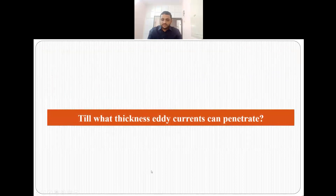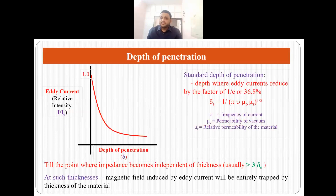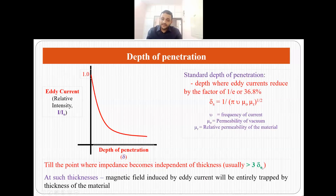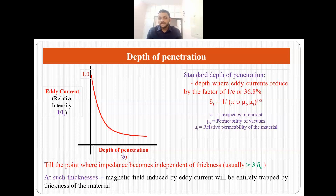One question that arises is: till what thickness can eddy currents penetrate inside a specimen to detect defects? That is given by the depth of penetration. The standard depth of penetration is the depth where eddy currents reduce by a factor of 36 percent. Usually we can use eddy current testing up to a thickness of 3 delta-s, because up to 3 delta-s the impedance value becomes independent of thickness — beyond that, the magnetic field will be entirely trapped by the material and eddy current testing cannot be performed for samples whose thickness is more than 3 delta-s.